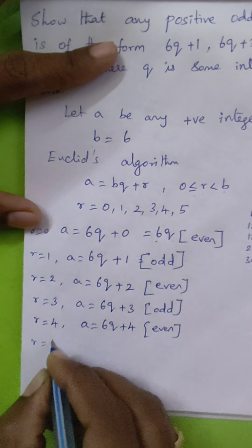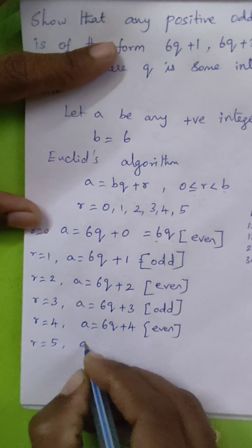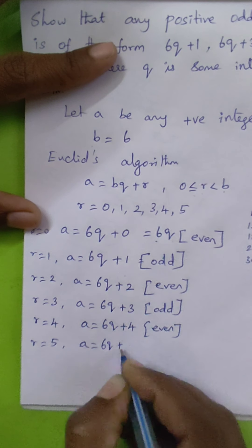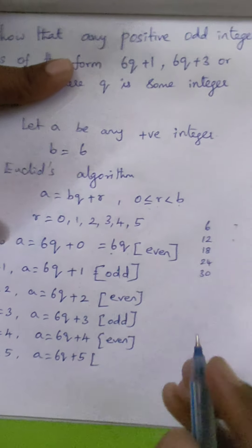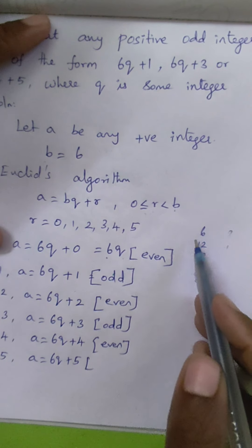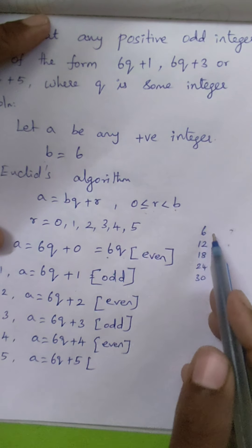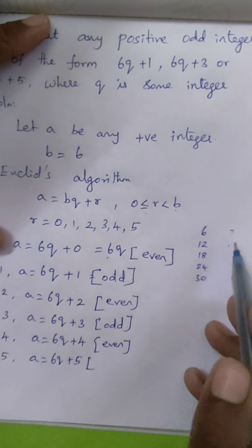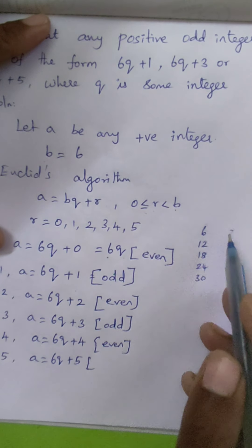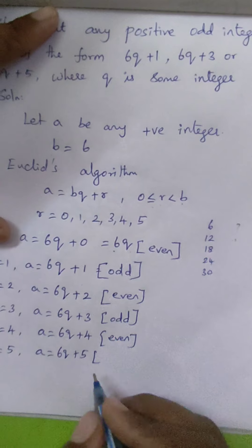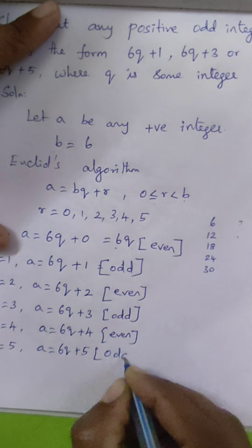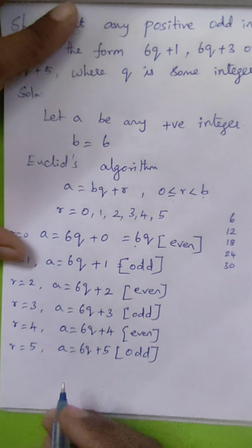Next, r equals 5, so a equals 6q plus 5. Adding 5 to multiples of 6, we get 11, 17, and so on. All those values are odd, and from this we conclude...